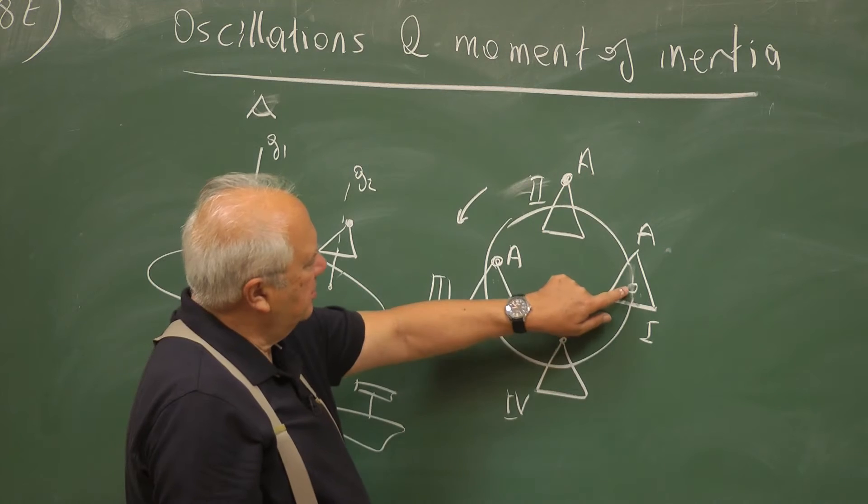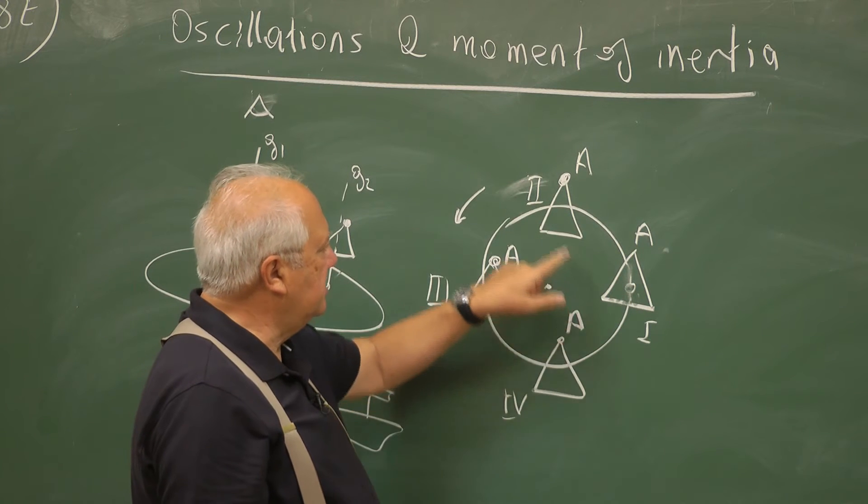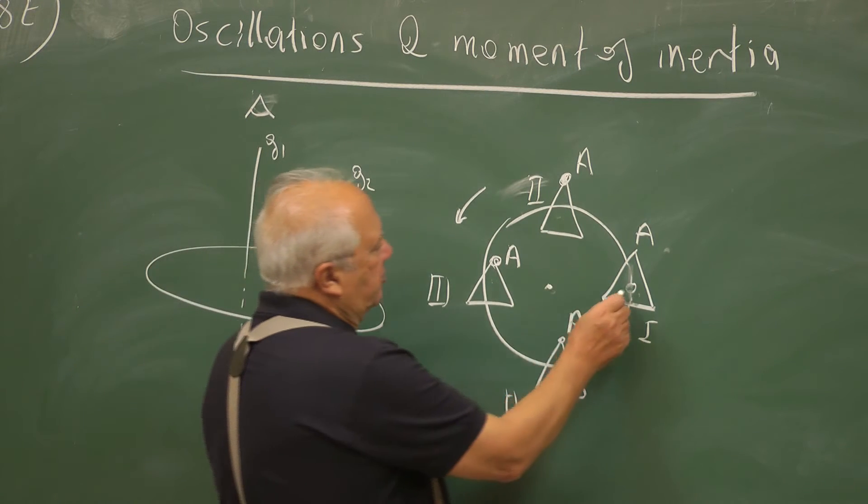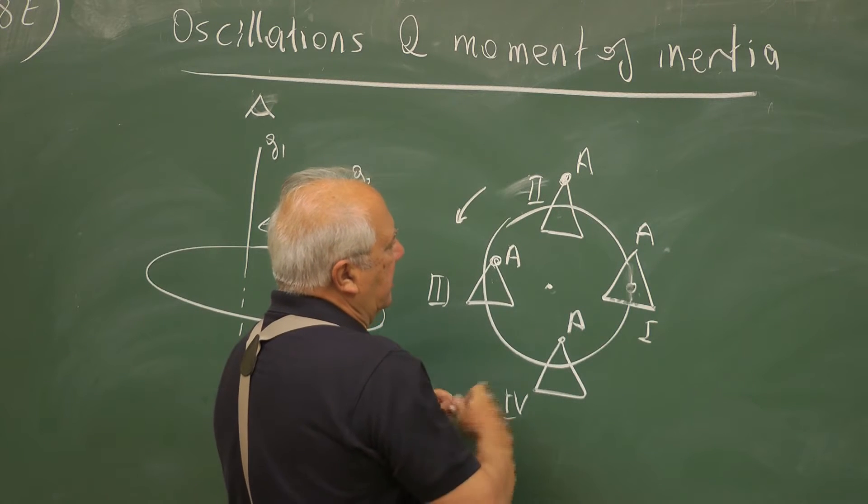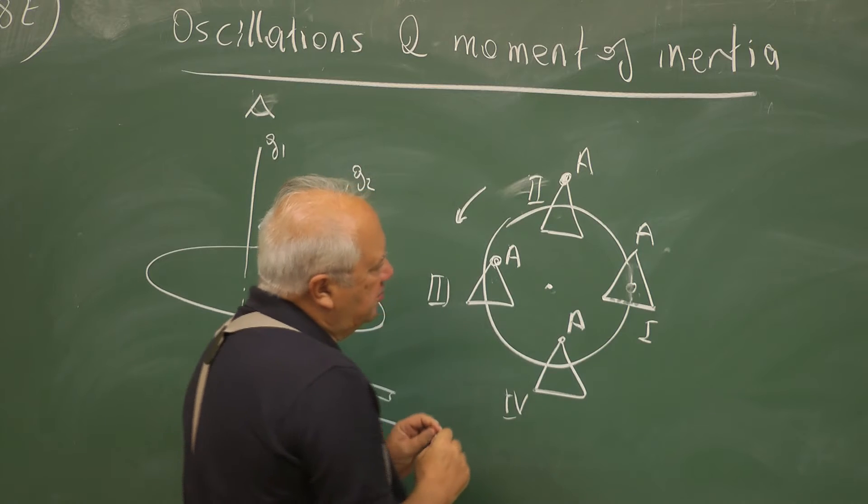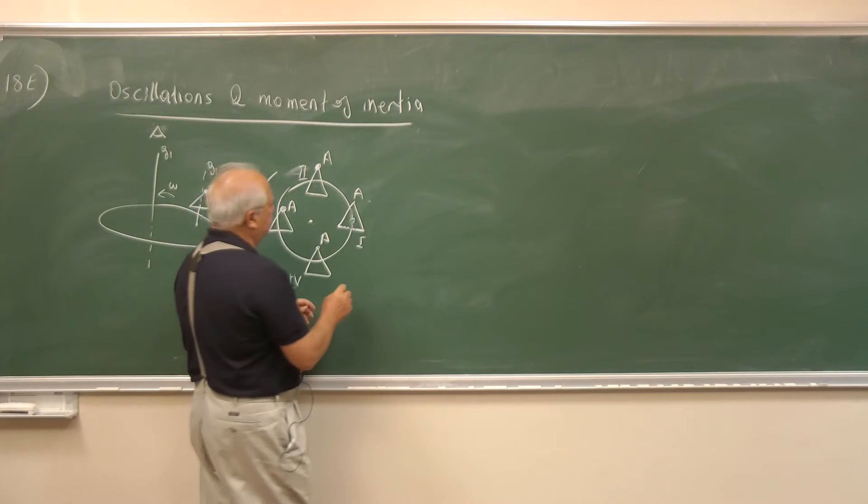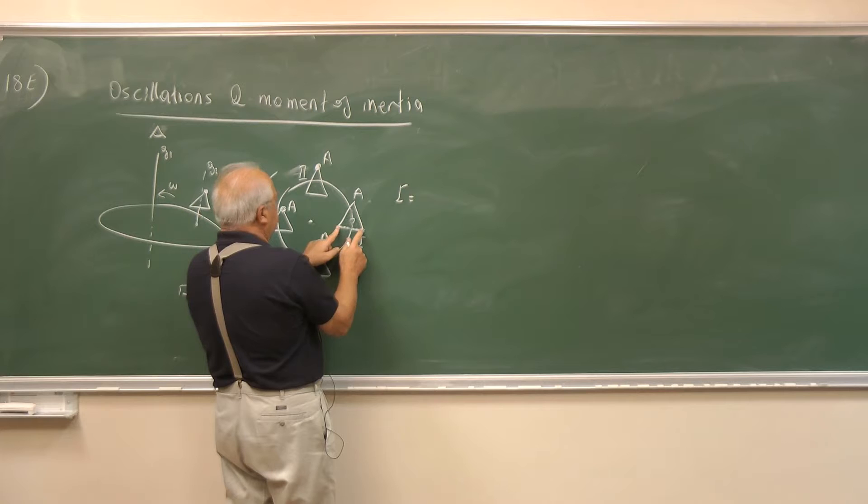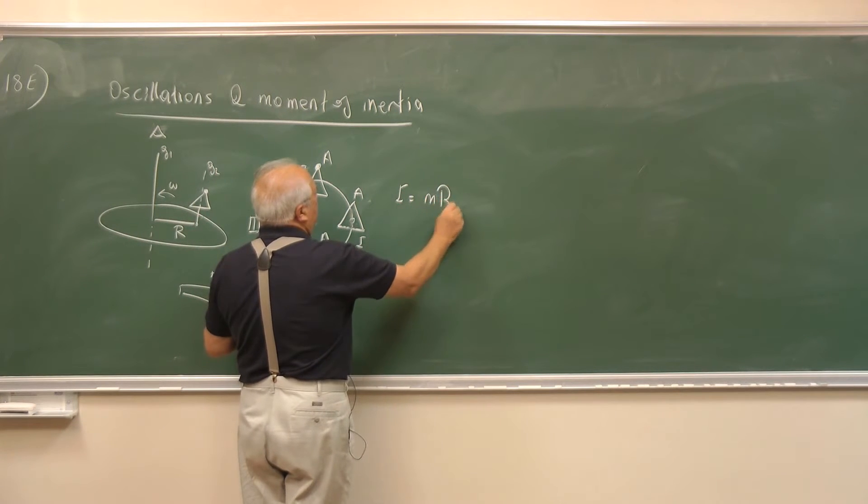Now what happened? Disk rotated once about its axis. That means the central mass, we assume this G2 passes through the central mass of this object. So the central mass of this object moved together with the disk once about the circle. But the triangle or this object did not rotate about its axis. So it's really the motion of the central mass, the circular motion of the central mass. So the moment of inertia that this triangle object presents to the disk is simply, if this distance is r, it is m r squared.